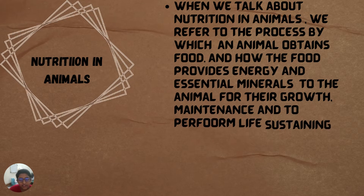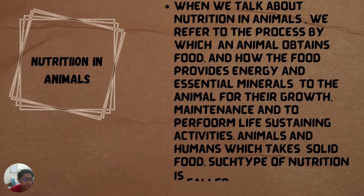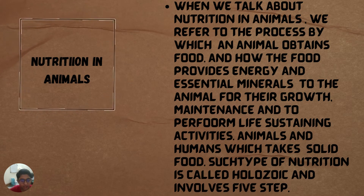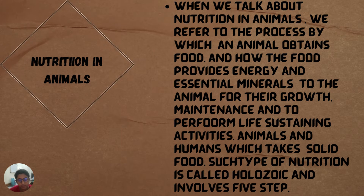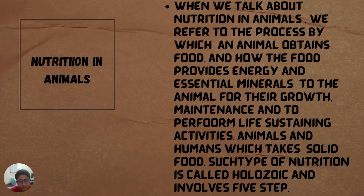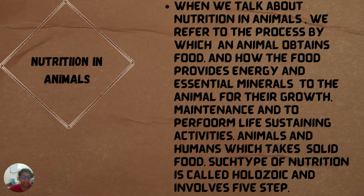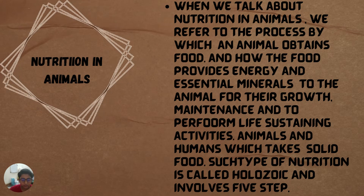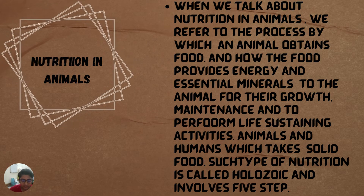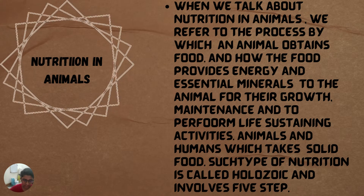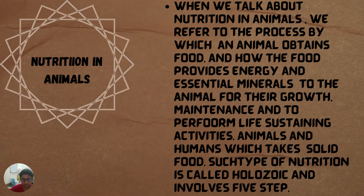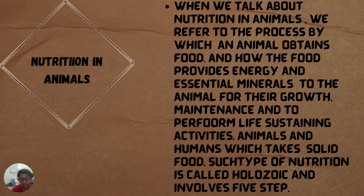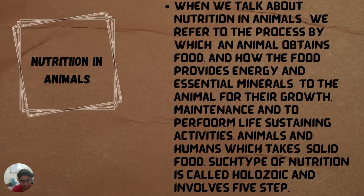The first topic is nutrition in animals. When we talk about nutrition in animals, we refer to the process by which animals obtain food and how the food provides energy and essential minerals for their growth, maintenance, and to perform life-sustaining activities.